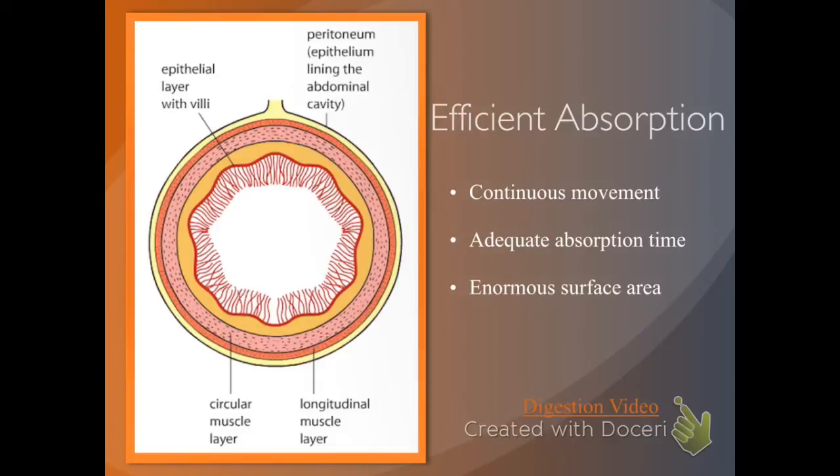The small intestine is very large—in humans, it's six meters long, and in cows, it's actually 40 meters long. It has a lot of time for adequate absorption. In addition, it has an enormous surface area. The inner layer is covered in villi, which allow for a gigantic surface area.